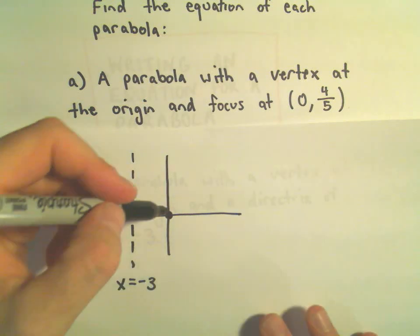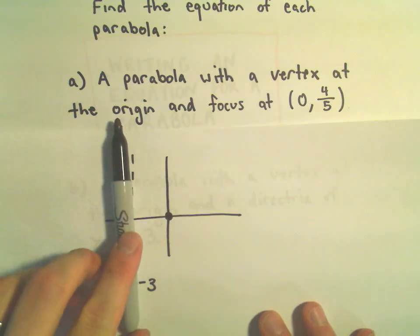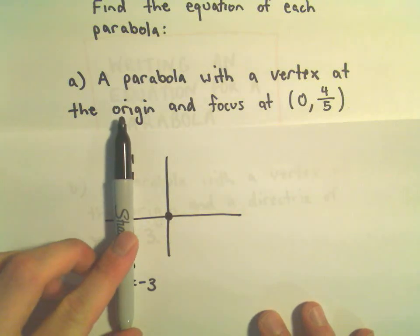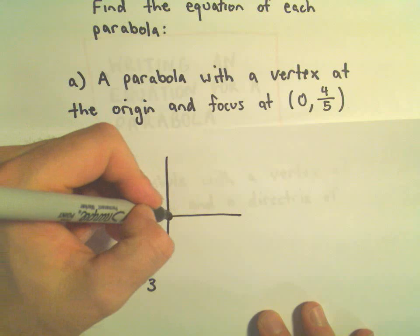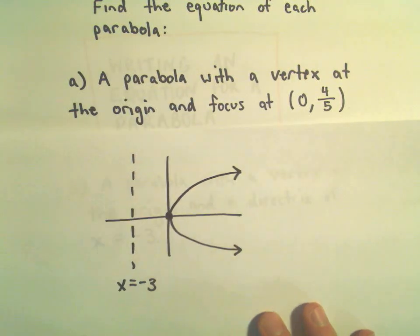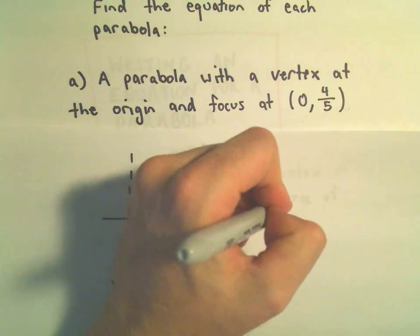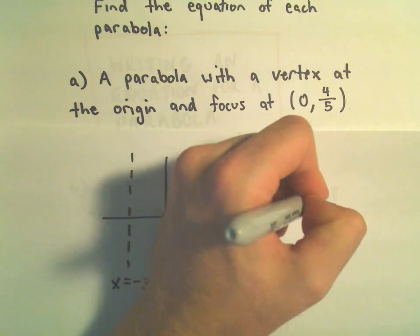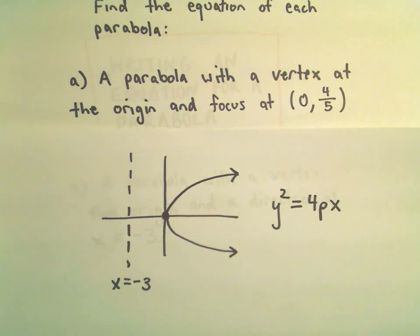Alright, well in this case, since the directrix kind of sits behind the parabola, I know that the parabola is going to be opening to the right. So in this case it's going to have a form y squared equals four times p times x.